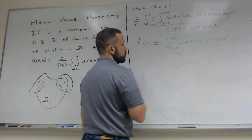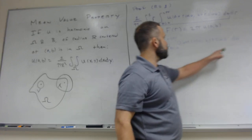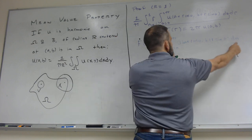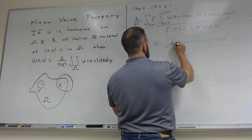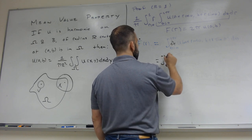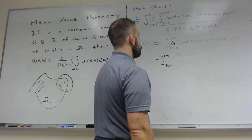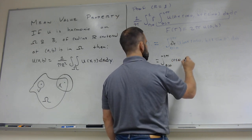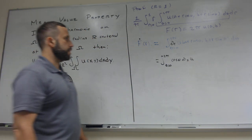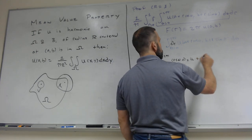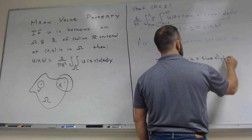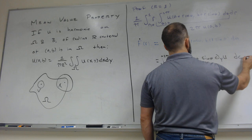Using the chain rule, differentiating with respect to r gives cos θ times the partial x-derivative of U, plus sin θ times the partial y-derivative of U, integrated dθ. I'm not writing the argument because it gets too long for the board.